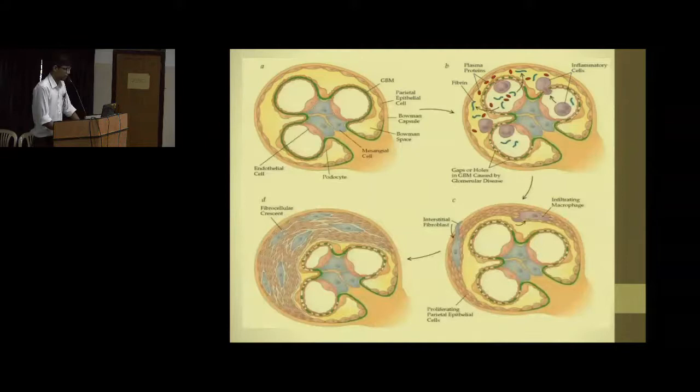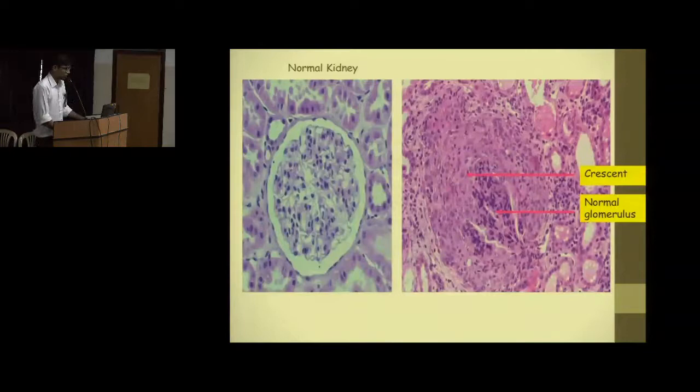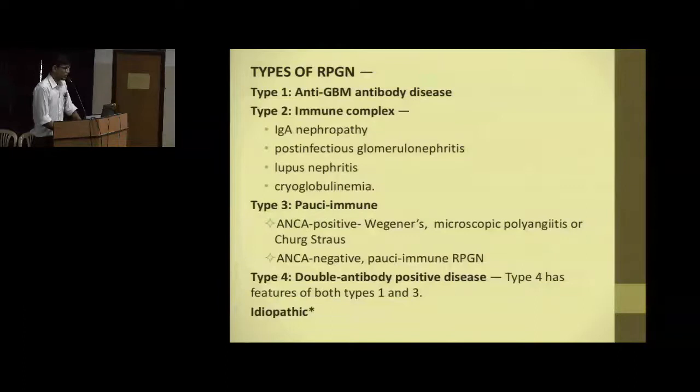From these pores, fibrinogen and plasma products leak into Bowman's space, causing fibrin formation, influx of T cells and macrophages, and an inflammatory reaction causing glomerulonephritis. One can see how the basement membrane has been damaged and crescents are formed. There are four types of RPGN: Type 1 is anti-GBM antibody disease; Type 2 is due to immune complex deposition; Type 3 is pauci-immune glomerulonephritis, which can be ANCA positive or negative; and Type 4 is when double antibodies are positive.